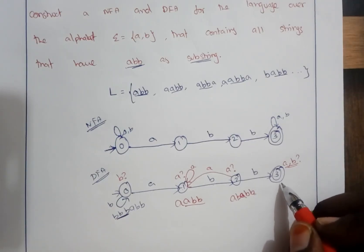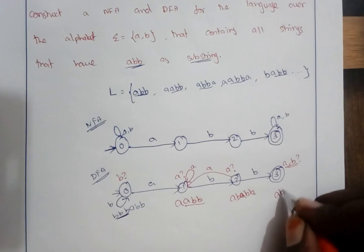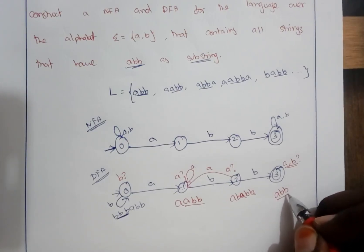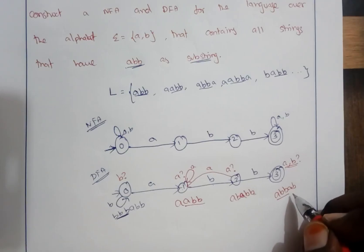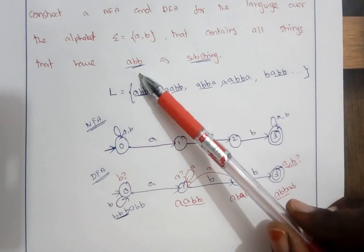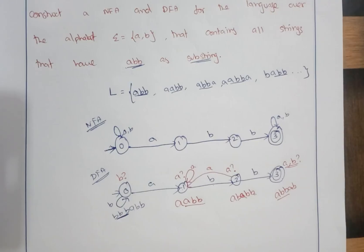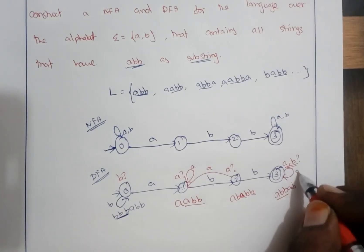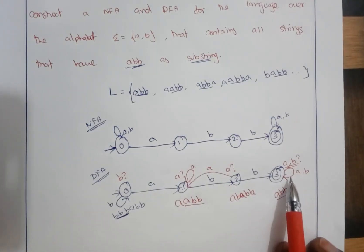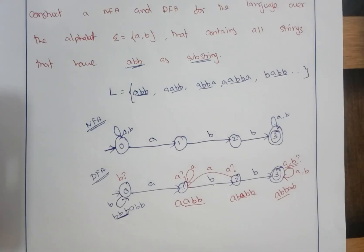State 3 is a place where we have already found ABB occurring in sequence somewhere in the string. After reaching state 3, you can have either A, B, or any combination. Since our condition is to accept all input strings that contain ABB as a substring, after processing ABB we can have anything — in the prefix and suffix of that ABB we can have any element. So I can make a self-loop condition in state 3 for all remaining elements. Since this is the final state where ABB is already found, we stay in the final state. At the end of input, if the transition remains in this final state, the input will be accepted.